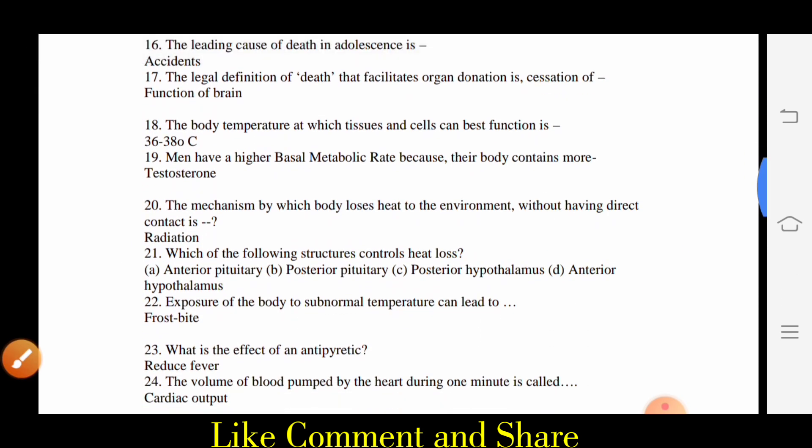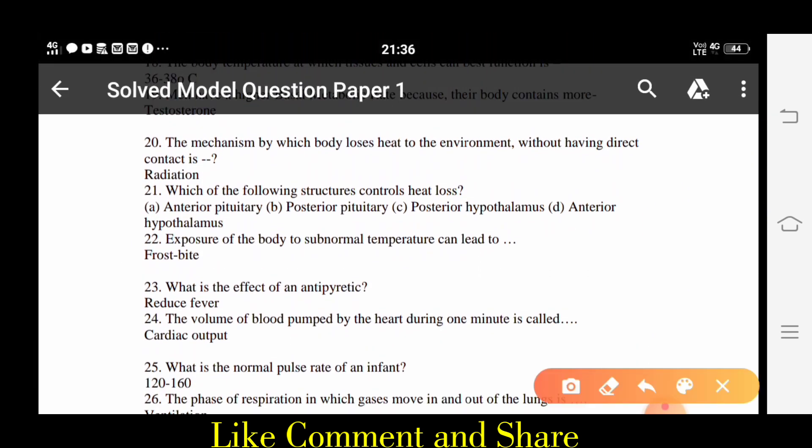18. The body temperature at which tissues and cells can best function is 36-38°C. 19. Men have a higher basal metabolic rate because their body contains more testosterone.